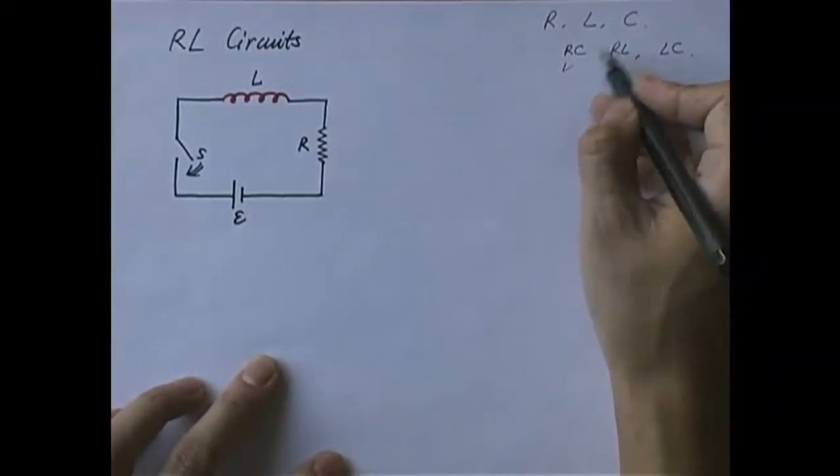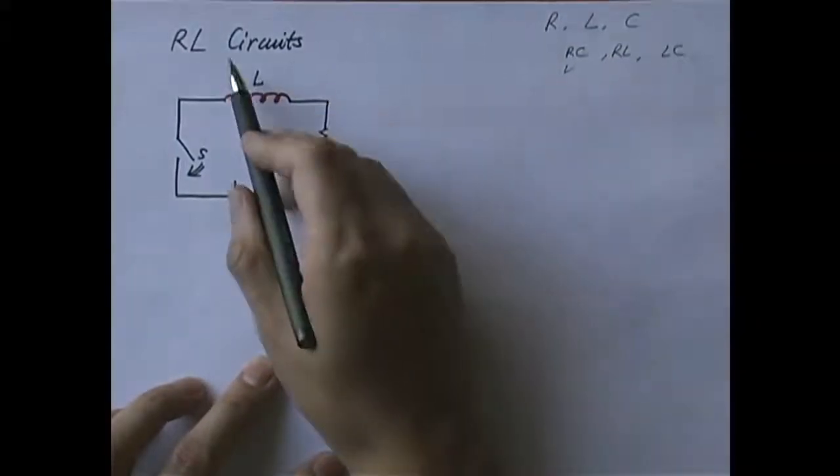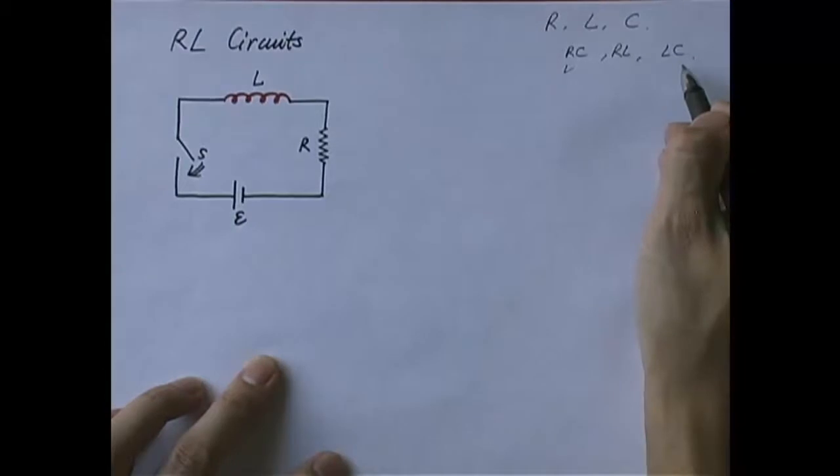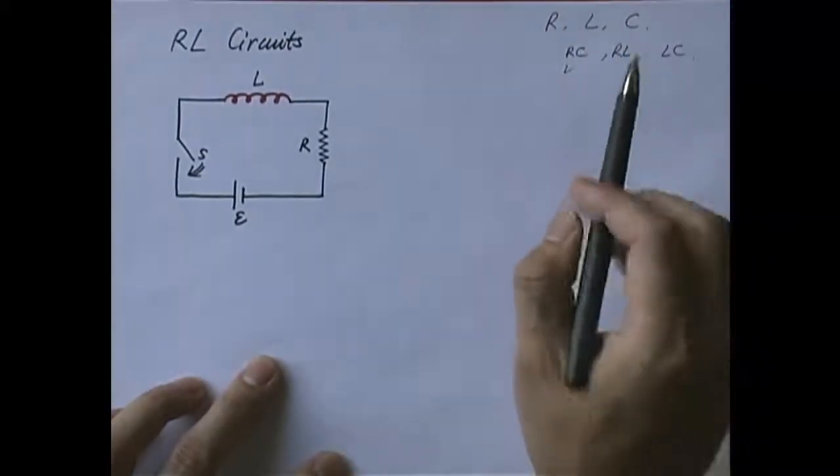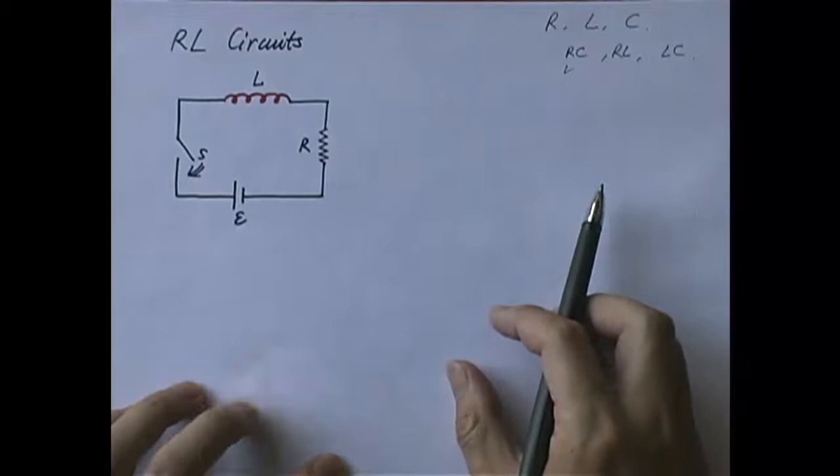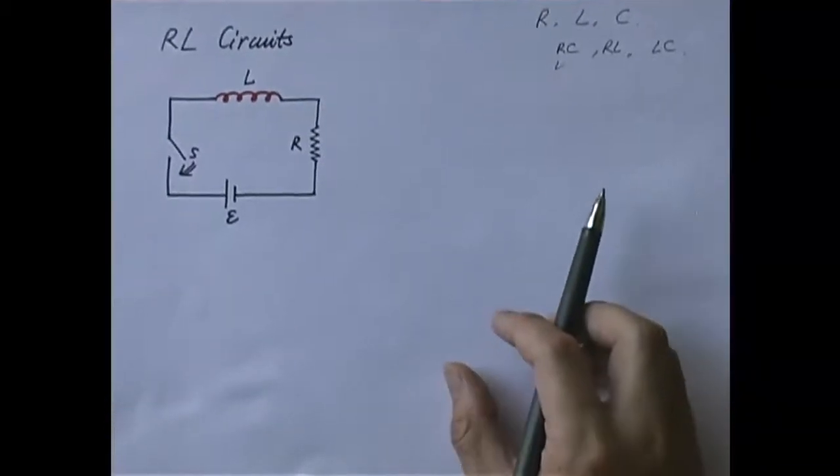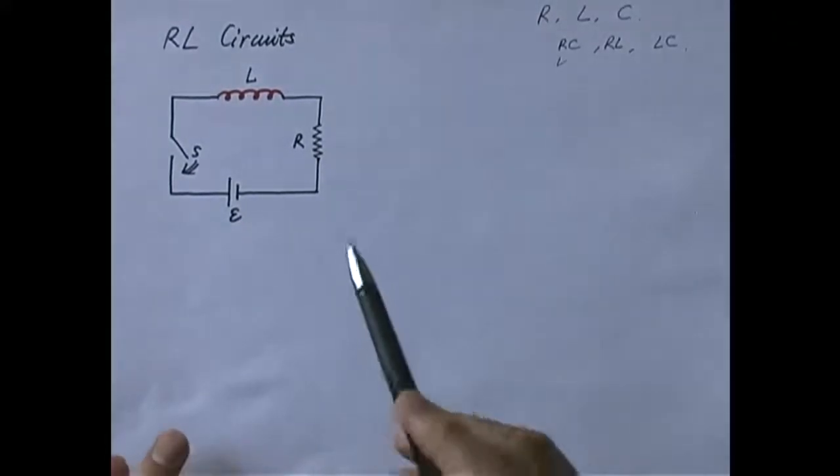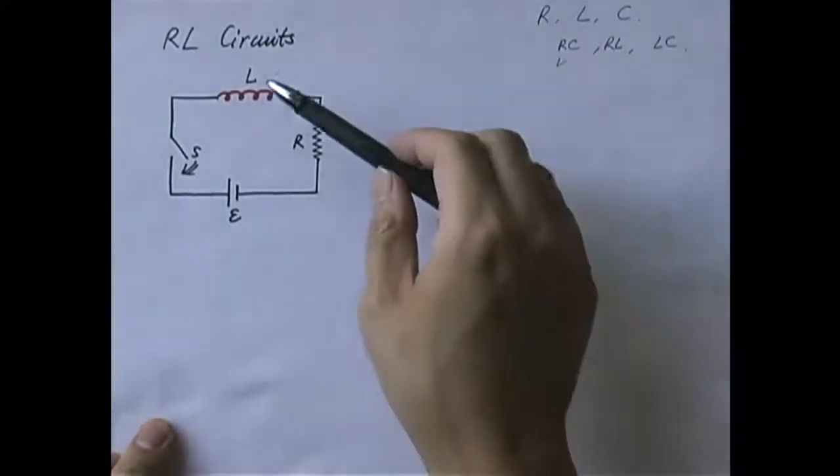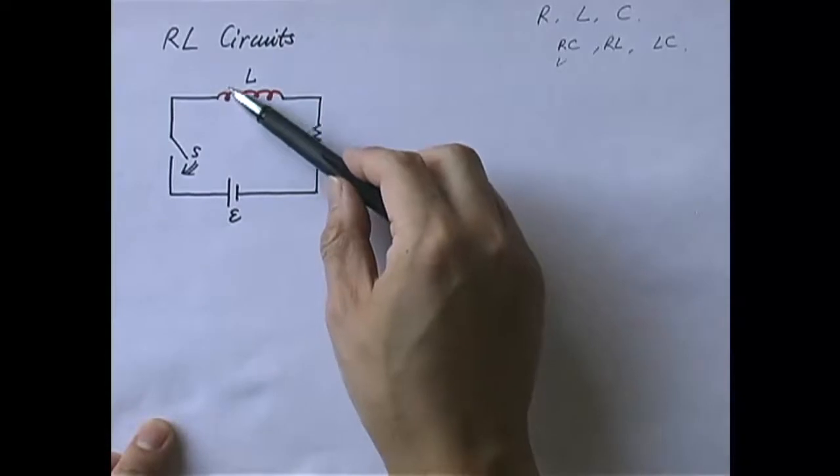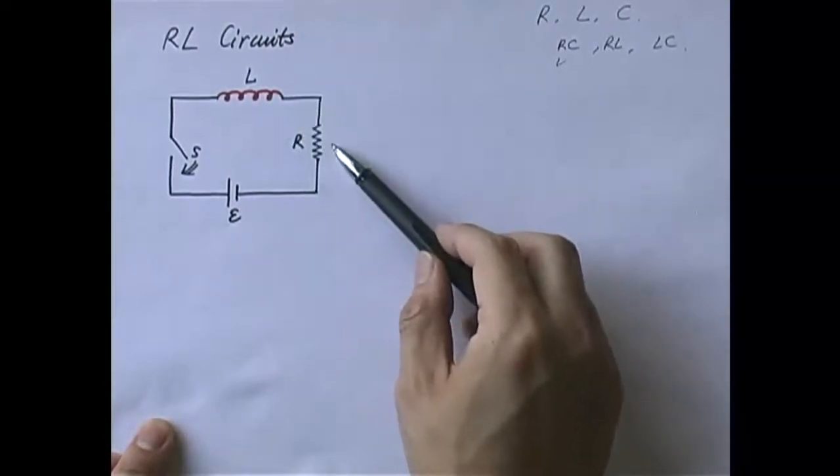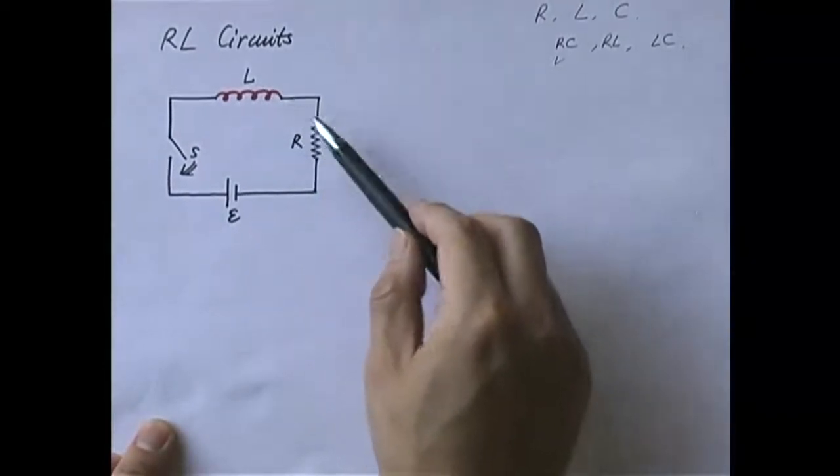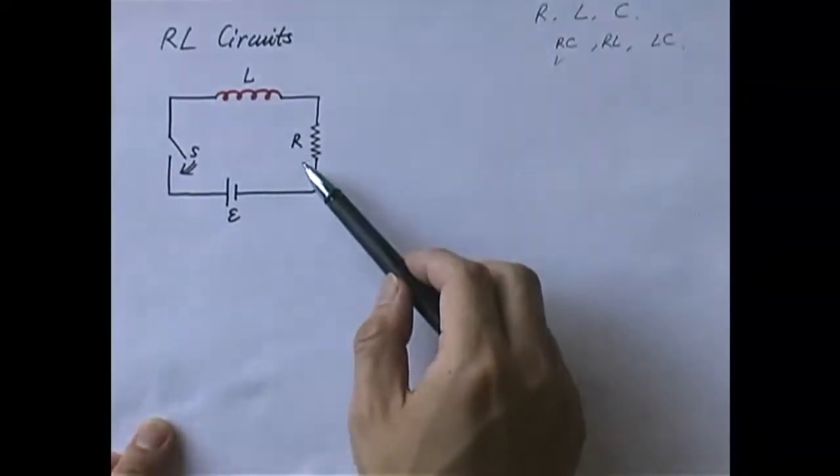We're going to study RC circuit, charging, discharging, right? RL is what we're going to study right here, and LC we're going to study a little bit later in this chapter. And of course, after that, we're also going to study R, L, and C, put all three elements together in the same circuit. So let us now study the so-called RL circuit. It basically consists of an inductor. By the way, this is a symbol of an inductor.